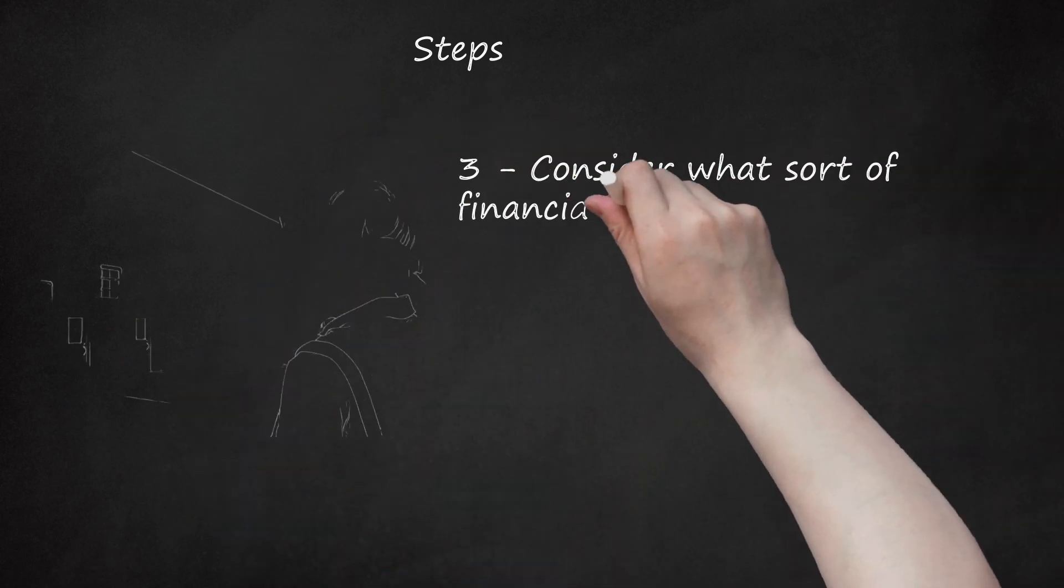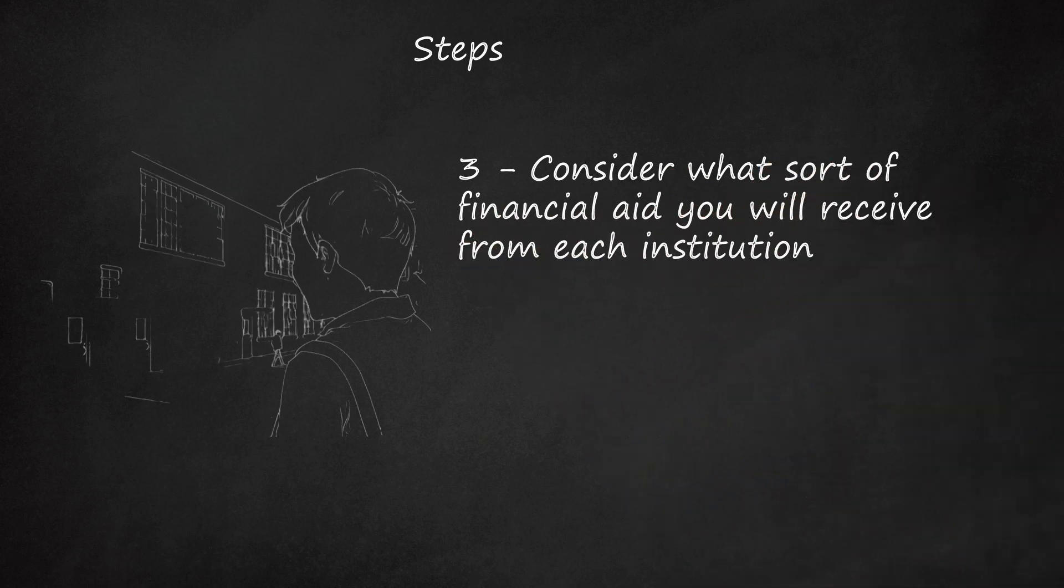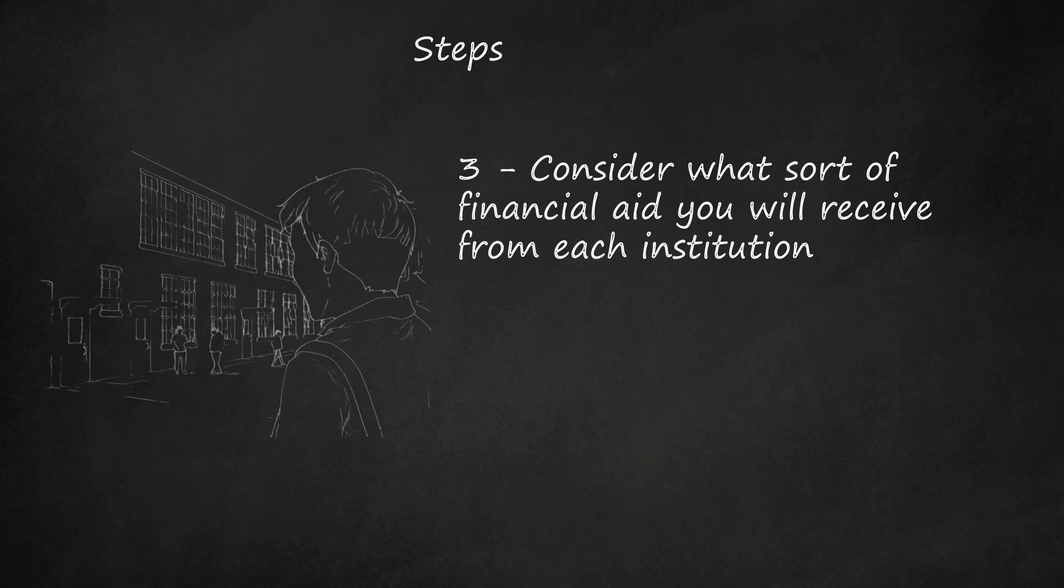3. Consider what sort of financial aid you will receive from each institution. There are many different types of aid available to you when applying to colleges. Be sure you understand the type of aid you are receiving. Merit scholarships are given out if you show extraordinary achievement in school or in extra-curricular activities. Need-based scholarships are based on how much you need the money due to your financial situation. Therefore, it is important that you accurately fill out the section in the college's application which asks about your family's financial situation. State and federal grants are generally a combined need and merit-based award. The amount awarded is usually not as high.